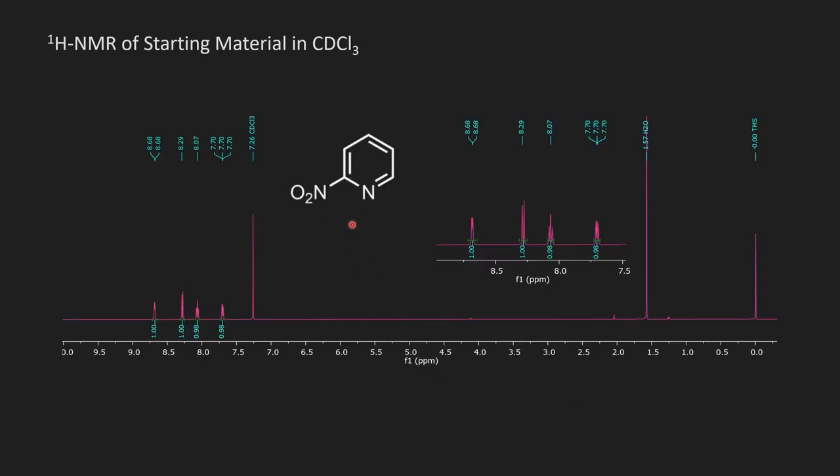The first NMR is the starting material, this is the 2-nitropyridine. You can see that there's four protons from this one, two, three, four positions on the ring. These all have nice splitting patterns, which isn't super relevant here, we're just showing that this is clean starting material. The things I want to highlight here include the chemical shift of these peaks, 8.7 and 8.3. You can just remember those two, as we'll be looking for those spots in the product.